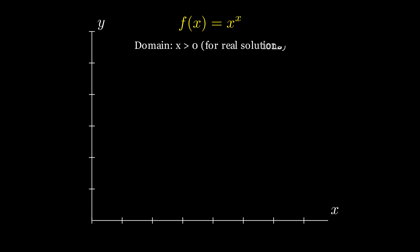First, we need to be careful about the domain. For real solutions, we need x to be positive, since we can't easily define something like negative 2 to the power of negative 2 in the real numbers. If we graph y equals x to the x for positive values of x, we get a striking curve. You'll notice it dips down to a minimum near x equals 0.37 and then shoots upward very quickly as x increases.